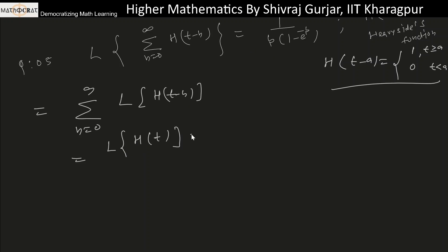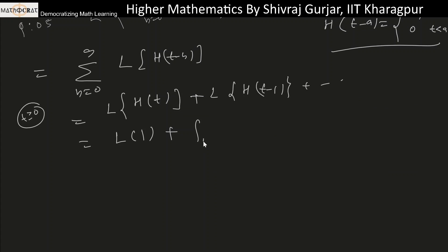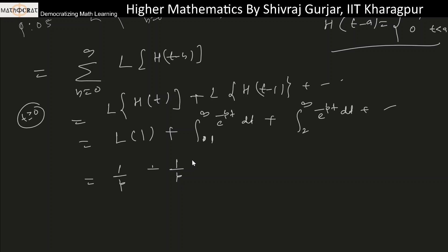Expanding, this is Laplace of H(t) plus Laplace of H(t-1) plus Laplace of H(t-2), and so on to infinity. The Laplace of H(t) is the integral from 0 to infinity of e^(-pt) dt since H(t)=1 for t≥0, which equals 1/p. For H(t-1), we integrate from 1 to infinity of e^(-pt) dt, giving (1/p)·e^(-p). For H(t-2), the integral from 2 to infinity gives (1/p)·e^(-2p), and so on.